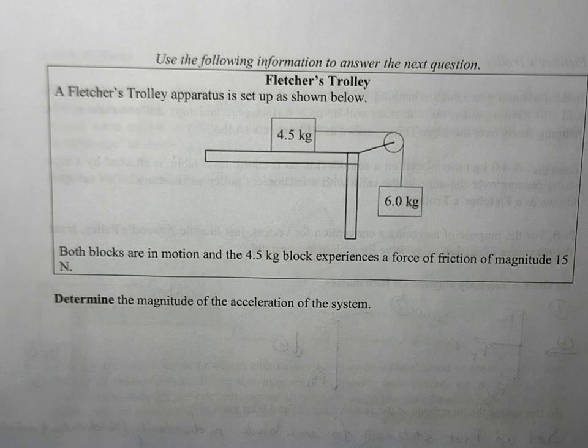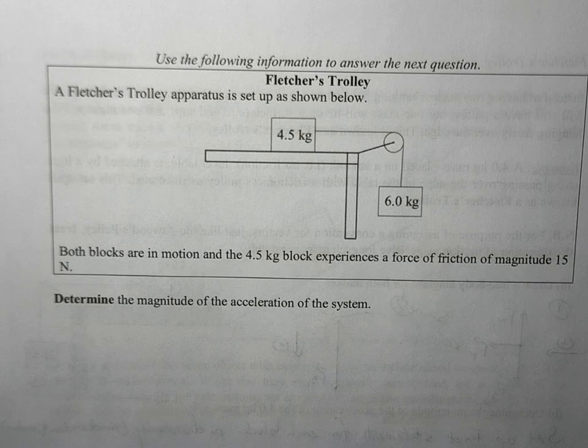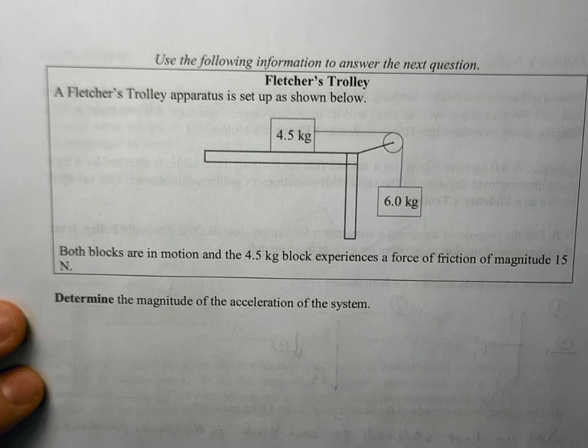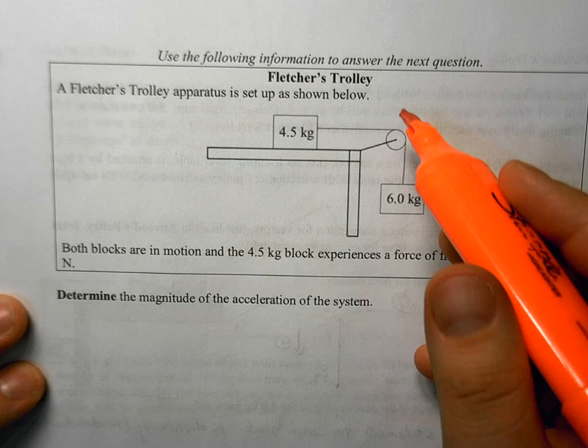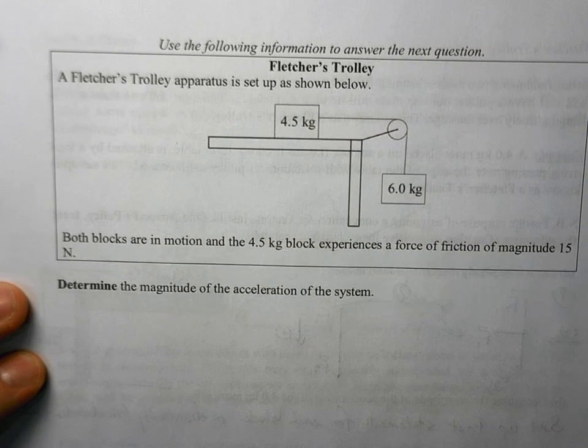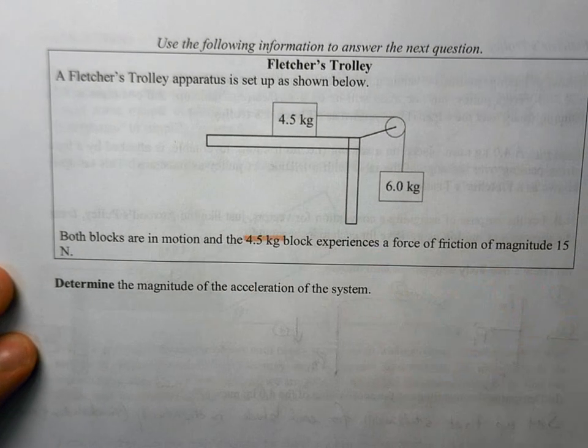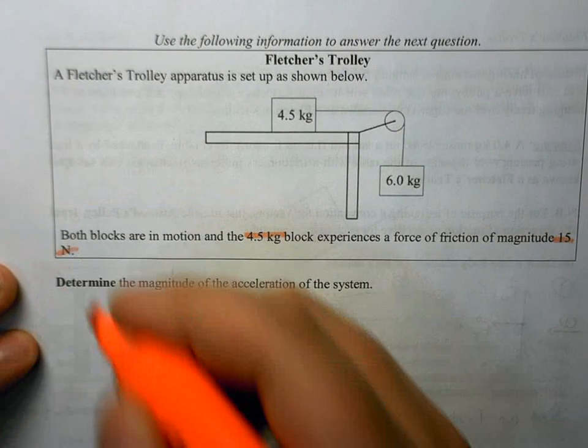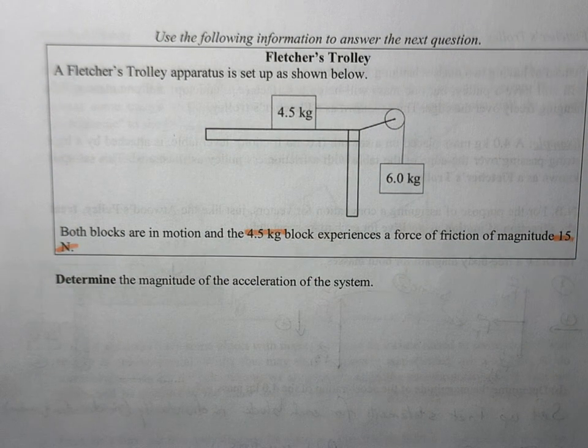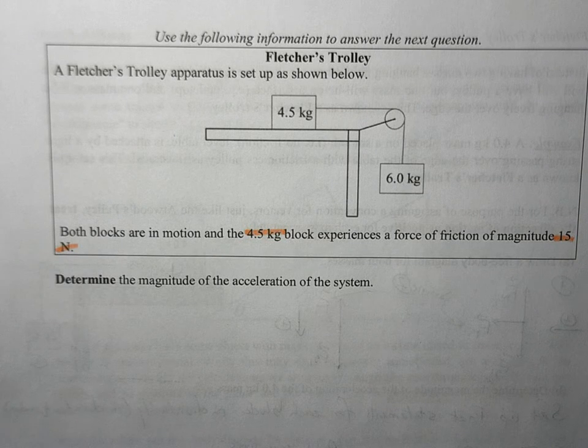All right, let's look at one more Fletcher's Trolley question, but this time we're going to throw some friction. So we have a Fletcher's Trolley set up like this. We have a 4.5 kilogram mass sitting on the table, we have a 6 kilogram mass that's hanging over the pulley, and we're told that this 4.5 kilogram block experiences a force of friction with a magnitude of 15 Newtons. So we want to look at what's actually going on here.